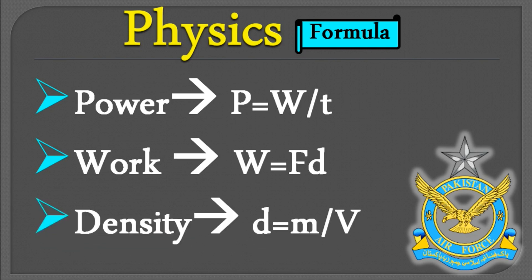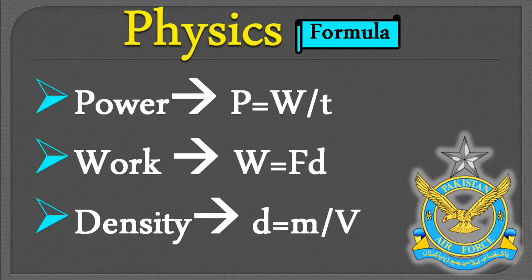Density ایک بہت important formula ہے: d = m/V، جہاں V بڑا ہے یعنی volume۔ اگر v چھوٹا ہو تو اس کا مطلب velocity ہے، لیکن بڑا V کا مطلب volume ہے۔ density نکالنے کے لیے mass کو volume سے divide کیا جاتا ہے۔ MCQ میں m/v لکھا ہو تو آپ نے بڑا V لکھنا ہے، چھوٹا v نہیں۔